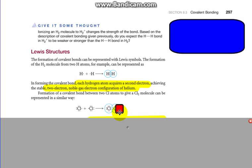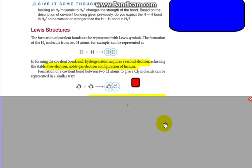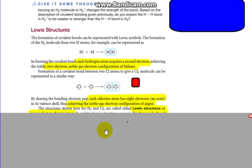Using this little red cover, the chlorine on the left has eight. The chlorine on the right has eight. So everything's stable. Sharing one to get one. By sharing the bonded electron pair, each chlorine atom has eight electrons, an octet, in its valence shell, thus achieving the noble gas configuration of argon. Argon is one to the right of chlorine.